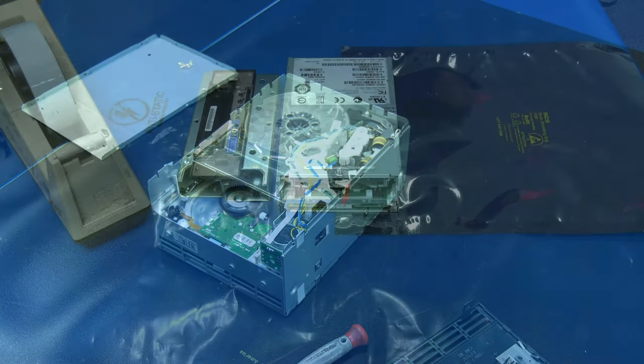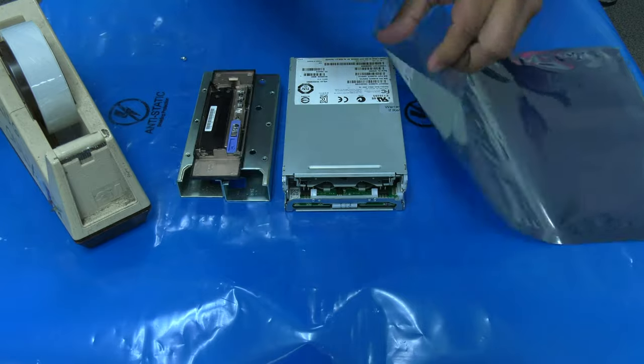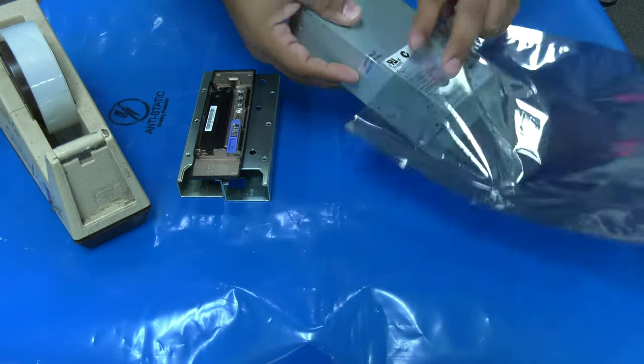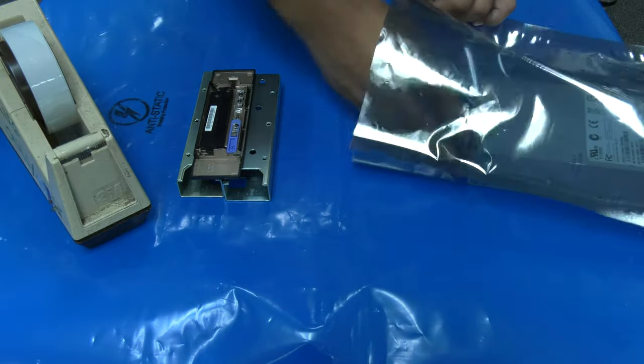If you are returning the defective drive as a core exchange to the Rocket Platform, you do not need to reassemble the drive. Simply place the top cover back on the drive and ensure that all screws and other small parts are included in the anti-static bag with the drive before shipping it back to us.